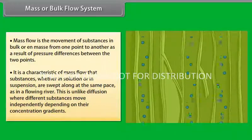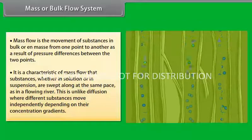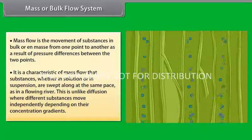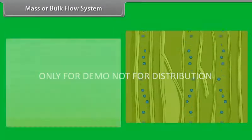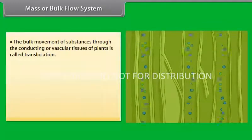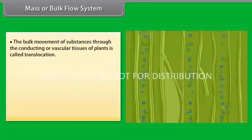Bulk flow can be achieved either through a positive hydrostatic pressure gradient, e.g. a garden hose, or a negative hydrostatic pressure gradient, e.g. suction through a straw. The bulk movement of substances through the conducting or vascular tissues of plants is called translocation.